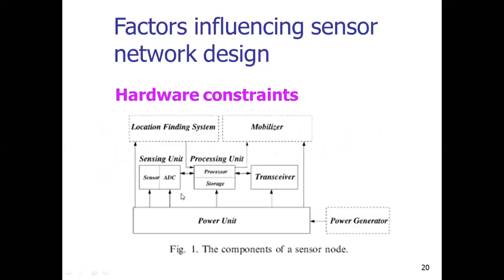Another important factor is hardware constraints. A sensor node consists of a power unit, a sensor with an ADC (analog-to-digital converter), a processing unit with processor and storage, a transceiver unit acting as both transmitter and receiver, an antenna, a mobilizer, and a location finding system. Since sensor nodes don't have continuous power, you can use backup power generators or solar generators to power the sensing, processing, and transceiver units.